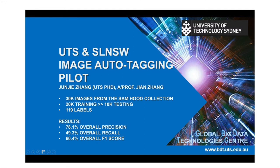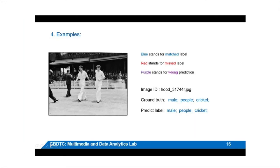Over that we had a 78% overall precision, 49% overall recall, and — the important one — a 60% overall F1 score, which represents how well we think it did. In the examples, blue stands for matched labels where it got the same label as we did, red stands for ones it missed, and purple stands for a wrong or different prediction.